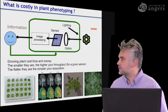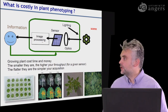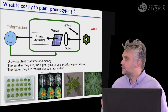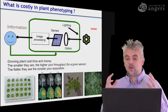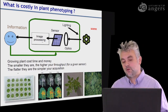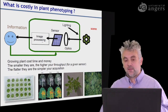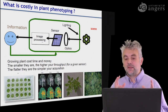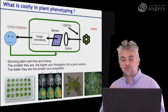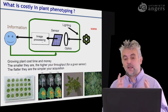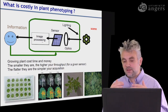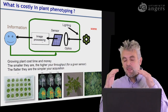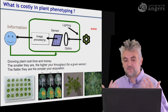The first element is, of course, the plant. Growing plants costs money. The smaller they are, the higher your throughput, and the flatter they are, the simpler your acquisition. As a biologist, maybe you have your own plant model with a certain complexity that does not completely fit with the use of images. You might have to think of tricks to make your plant somehow 2D — if you can manage this, everything in the computer vision pipeline will become simpler.